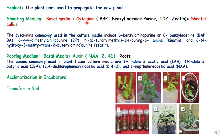Basal medium when supplemented with any cytokinin is called shooting medium. This cytokinin can be natural or artificial. The most commonly used cytokinins in tissue culture media are BAP (benzoyl adenine purine), TDZ, or zeatin, which induce shoots or callus giving rise to shoots. Additionally, 2-iP, kinetin, and zeatin can also be utilized to induce shoots in plants.